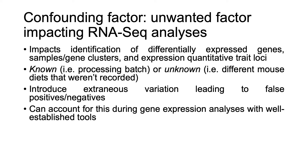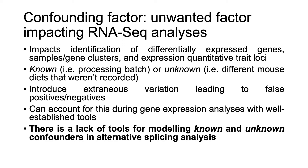Fortunately, confounding factors can be accounted for during gene expression analysis with well-established tools. For example, you may have heard of or used COMBAT or LIMMA. However, there is a lack of tools for modeling known and unknown confounding factors in alternative splicing analysis. We suspect this scarcity of tools reflects a general lack of awareness of the effect of confounders on splicing analysis. Specifically, we were not able to find any previous work that quantitatively assessed the effect of confounders on splicing analysis.